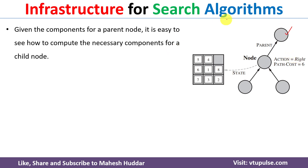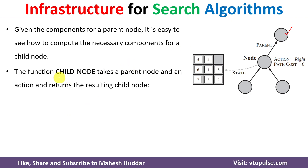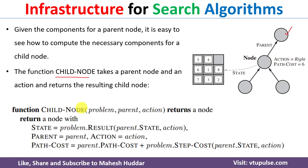While implementing the search algorithm, we use a function called child_node. What child_node does is it takes the complete problem, the parent, and an action. With the help of these three inputs it will generate the child node. The pseudocode for child_node takes the complete problem, the parent, and the action as inputs and generates a child node containing four components.